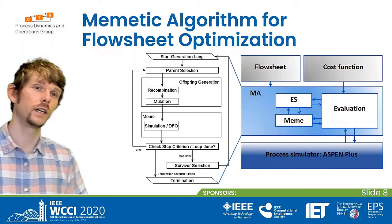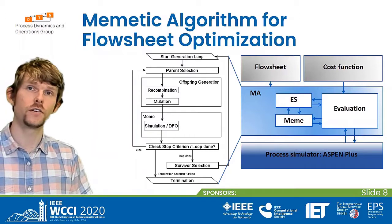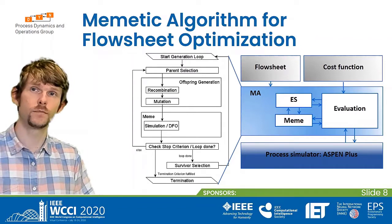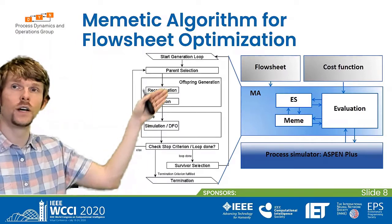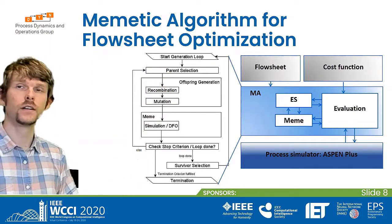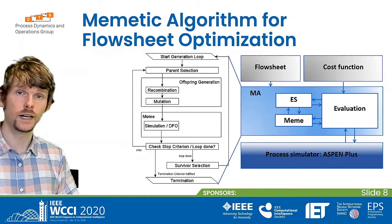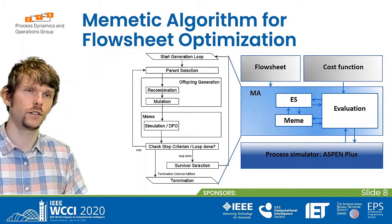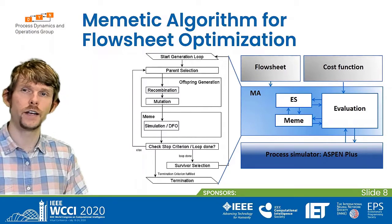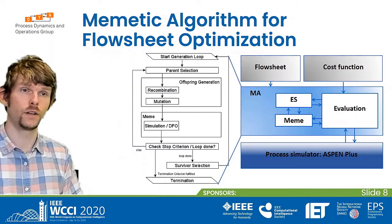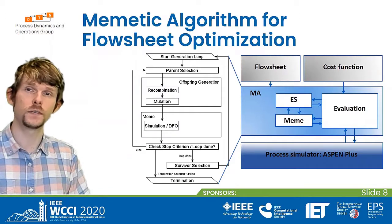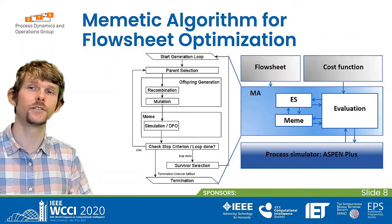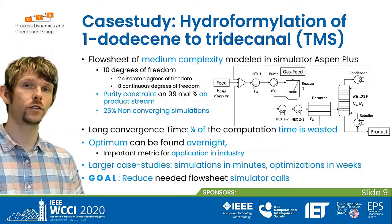Zooming into the memetic algorithm, we see the generation loop of an evolutionary algorithm. We start with uniform random initialization of every degree of freedom to get a population, then perform parent selection, recombine the plans, mutate the plans, and simulate them. We are free to apply a derivative-free local optimization, and then the stopping criterion is checked. If not fulfilled, we generate more offspring and repeat the generation loop.